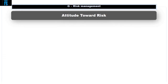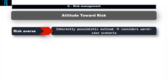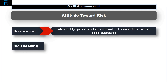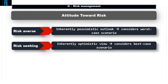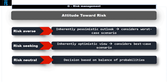Different decision makers may have a different attitude to risk. A risk-averse decision maker focuses on the downside and makes the decision that ensures the downside is the best it can possibly be — it's an inherently pessimistic outlook. A risk-seeking decision maker will consider potential upside and choose options where that upside is high, which is an inherently optimistic view. The risk-neutral decision maker will make their decision based on the balance of probabilities, without focusing particularly on positive or negative outcomes.